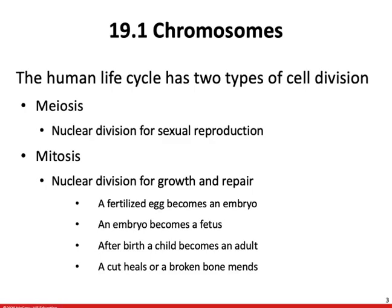Throughout the course of our lives, we're going to undergo two different types of cellular division, each with their own purposes. The first type is meiosis. Meiosis is used exclusively for nuclear division and sexual reproduction. This is only going to occur for the production of gametes or sex cells, like we talked about in our previous chapter. Once two haploid cells fuse together to become a single fertilized zygote, the cell is going to undergo mitosis. Mitosis is going to be used to grow a single cell into a multicellular organism — primarily for growth, but also repair. We're going to see mitosis when a fertilized egg becomes an embryo, an embryo becomes a fetus, after birth when a child becomes an adult, and any time a cut heals, a broken bone mends, or we need to replace damaged and worn-out cells.